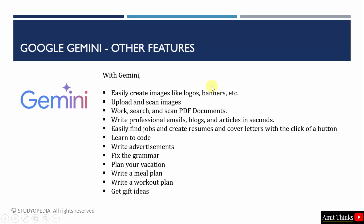Here are the features of Gemini. You can easily create logos and banners. You can also upload any image and ask Gemini what it thinks about that image. You can also upload PDF documents, understand their structure, generate key insights, list the headings, and scan documents completely to get information. You can write professional emails, set the tone and the length of the email, and write blogs and articles in seconds. You can also create a resume and generate a cover letter based on that resume.